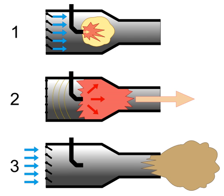Valved pulsejet engines use a mechanical valve to control the flow of expanding exhaust, forcing the hot gas to go out of the back of the engine through the tailpipe only, and allow fresh air and more fuel to enter through the intake as the inertia of the escaping exhaust creates a partial vacuum for a fraction of a second after each detonation. This draws in additional air and fuel between pulses.